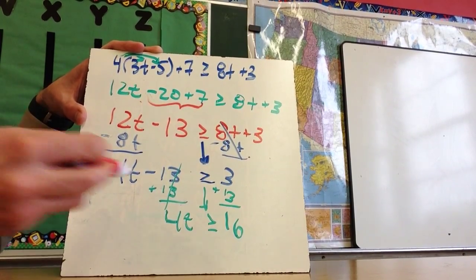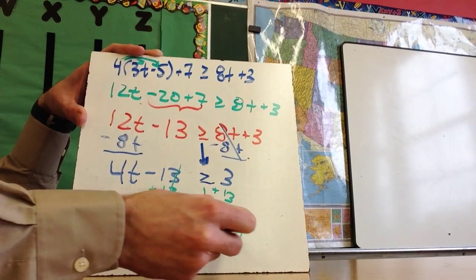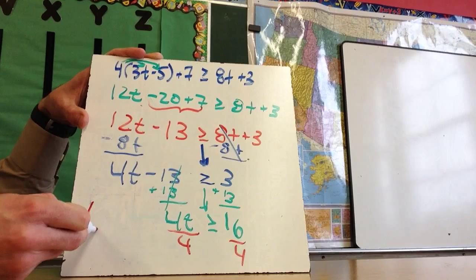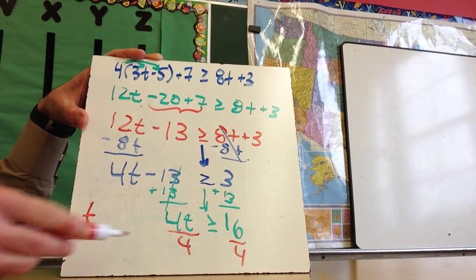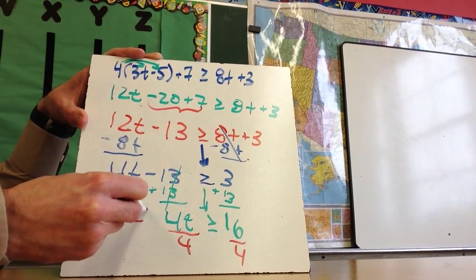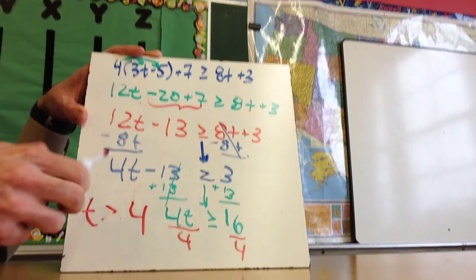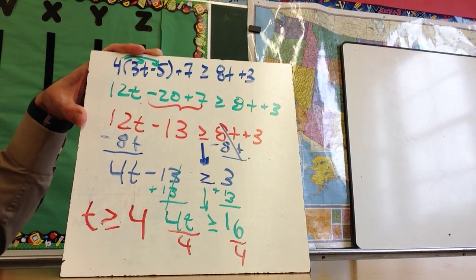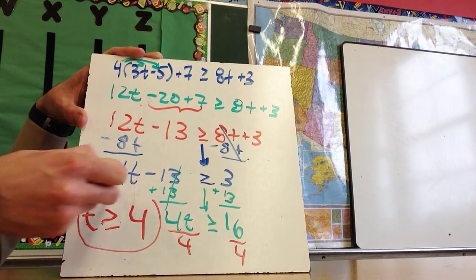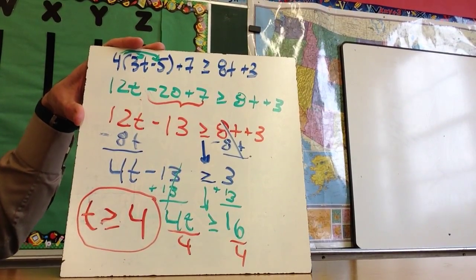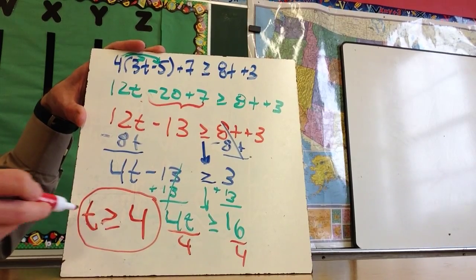And then I need to take the number that's in front of the t and divide that to both sides. I'm going to end up writing my solution over here. Since I divided by 4, but 4 is a positive number, the sign does not change. And so I should get t is greater than or equal to 4. I unfortunately ran out of space, so I'm not going to write the proper notation. Ideally, at this point, you're getting comfortable writing it the proper way.